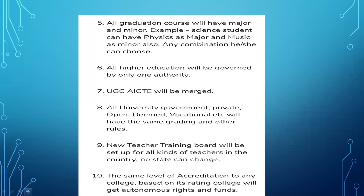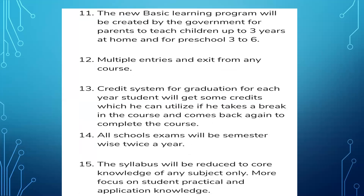UGC and AICTE will be merged. All universities — government, private, open, deemed, and vocational — will have the same governing and other rules. A new teacher training board will be set up, ensuring the same level of qualification and standards for teachers across the country. Colleges will be granted autonomous rights and funds based on testing.